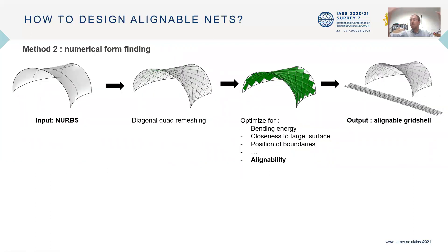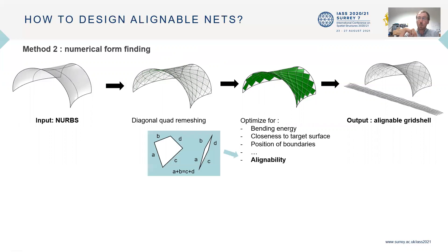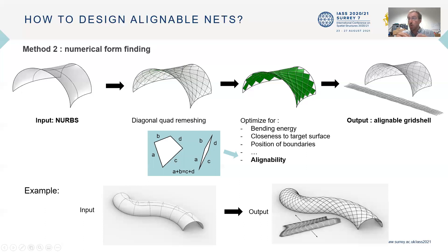Now, if we want to access the whole breadth of alignable nets and also to account more carefully for mechanics, you might use numerical form-finding. The following method was found to work well: you take as input a target surface, remesh it along diagonal nets, and optimize the resulting mesh to minimize bending, closeness to the target surface, the position of the boundaries, and alignability — which you ensure by constraining each face to fulfill the compatibility equation from the scissor linkages literature. You have one constraint per face to account for alignability, and doing so you have a workflow that is quite robust and quite intuitive.